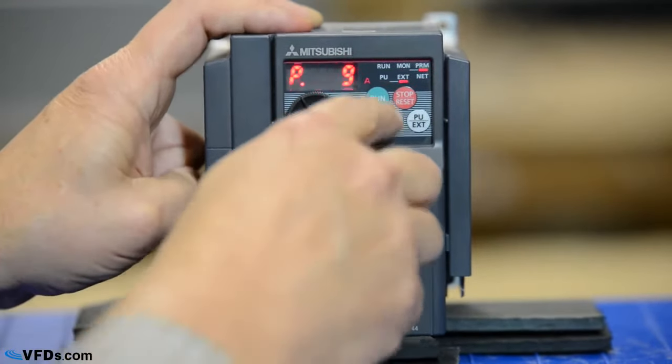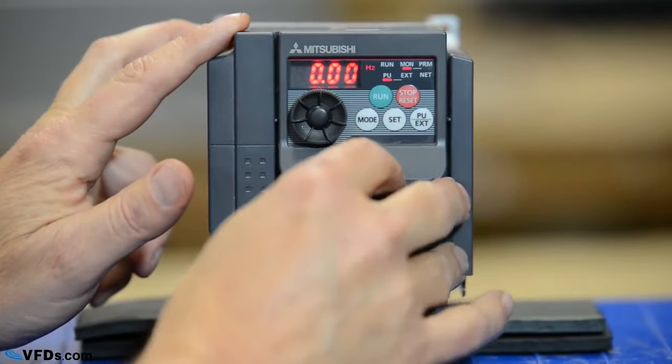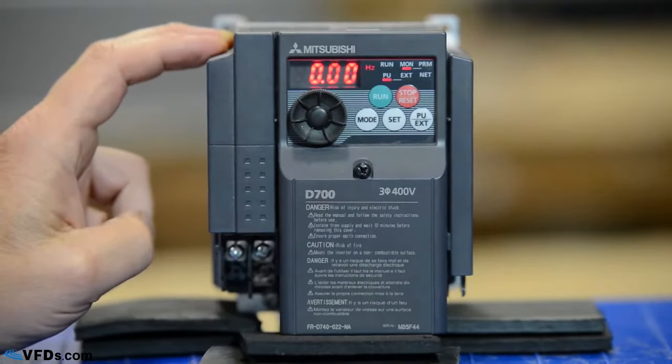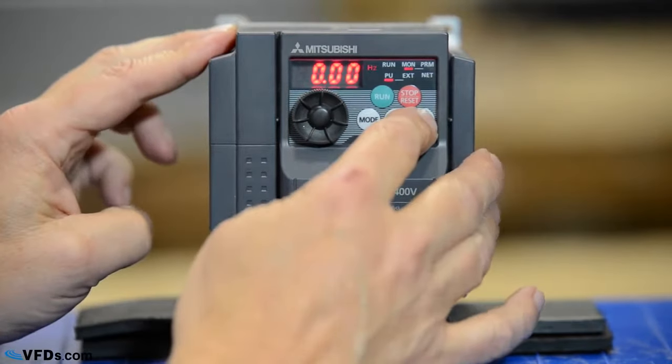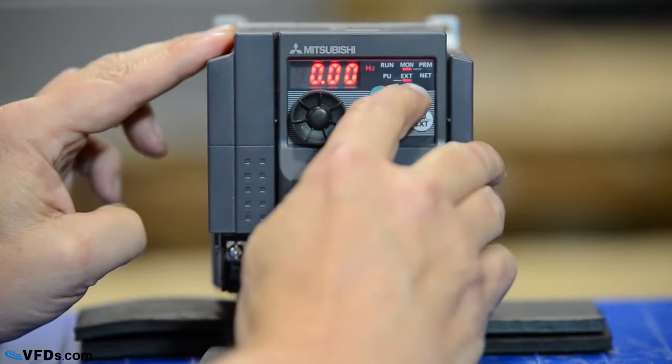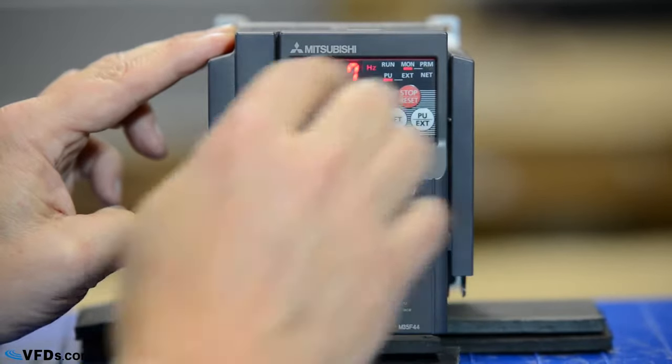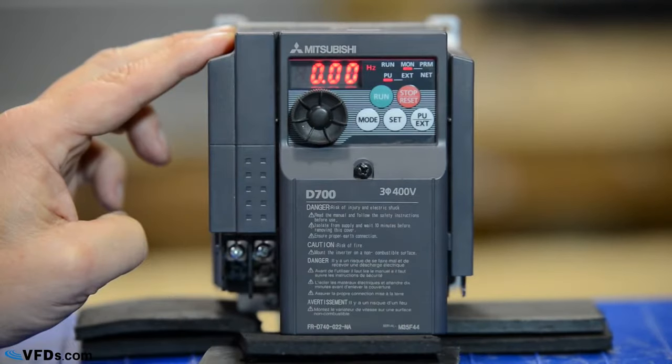Let's go ahead and run this drive. The first thing I want to do is make sure that I'm in the proper mode. Parameter unit allows me to run from the keypad. External allows me to run from different inputs. If I push this, you can see that I'm in parameter unit mode. Push it again, I'm in external mode. I want to be in parameter unit mode, so I'm going to toggle that back to parameter unit mode.